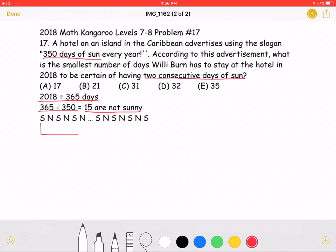This means that if we have a total of 15 not sunny days, we will have a total of 16 sunny days if they alternate like this.